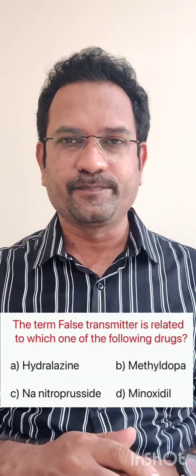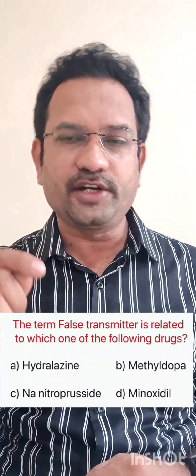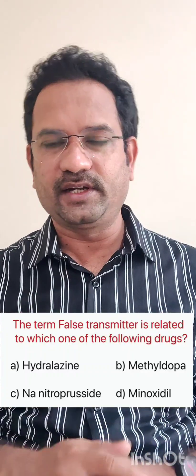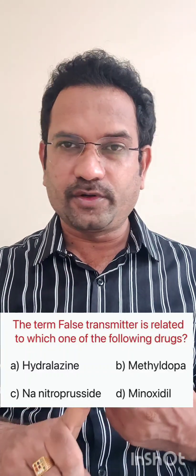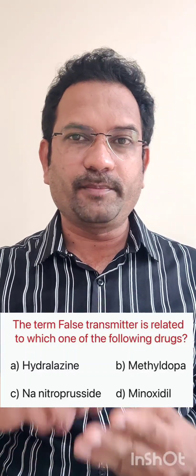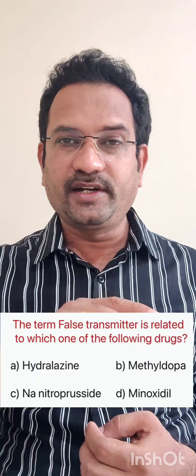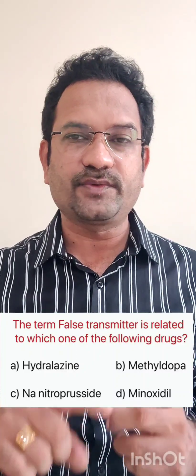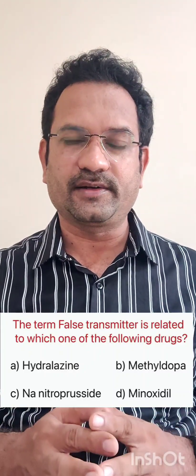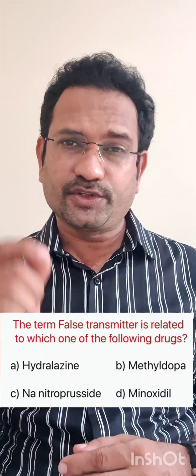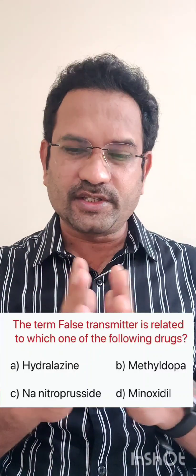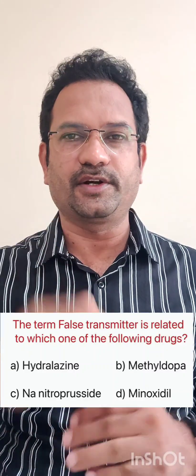Methyl dopa is the drug of choice to treat hypertension in pregnancy. The answer to the question about false transmitter is methyl dopa — option B. Looking at the other drugs: hydralazine, sodium nitroprusside, and minoxidil are all vasodilators. Hydralazine and minoxidil are arterial vasodilators, whereas sodium nitroprusside is both an arterial and venous vasodilator. Sodium nitroprusside is the drug of choice to treat severe hypertension — it is given and immediately causes vasodilation, bringing blood pressure under control.